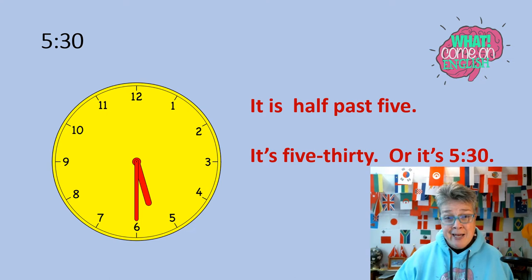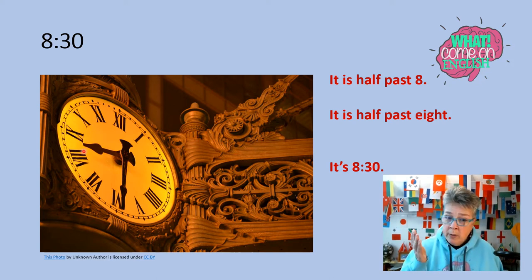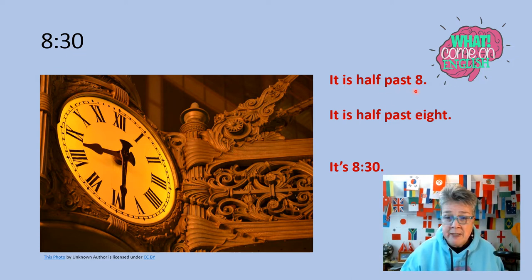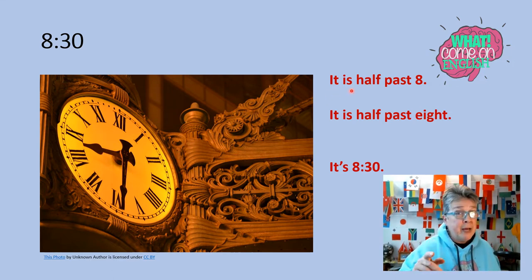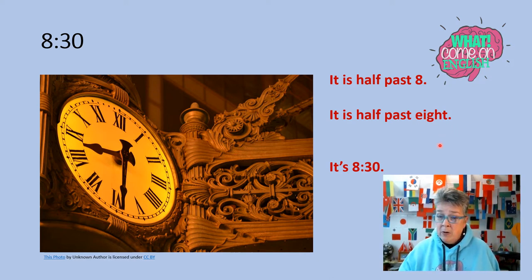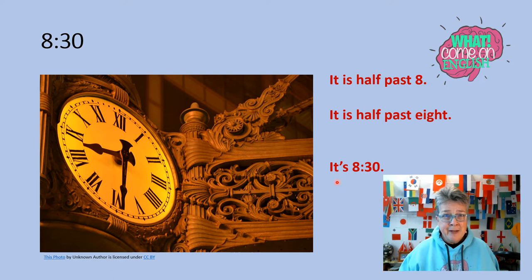Look at the time — Roman numerals! No worries. Here's the eight. It's eight thirty. It is half past eight, because the hour hand is between the eight and the nine. And the big hand is on the thirty — why thirty? Again, five, ten, fifteen, twenty, twenty-five, thirty. Eight thirty. It is half past eight written out. Or, it's eight thirty. You try it.